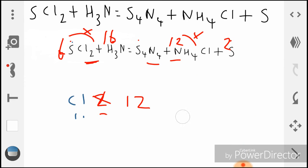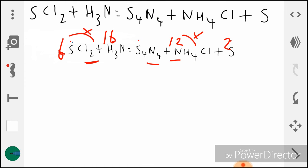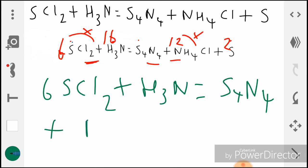We have balanced the equation. Let me write it out for you properly, shall I write it in green this time? Final answer is 6SCl2 + H3N = S4N4 + NH4Cl + S.